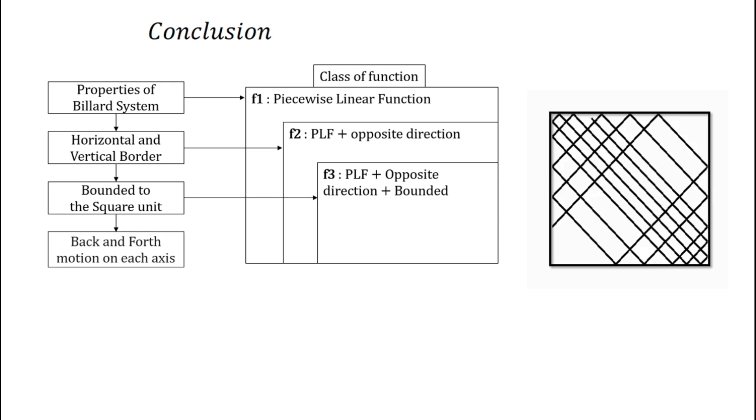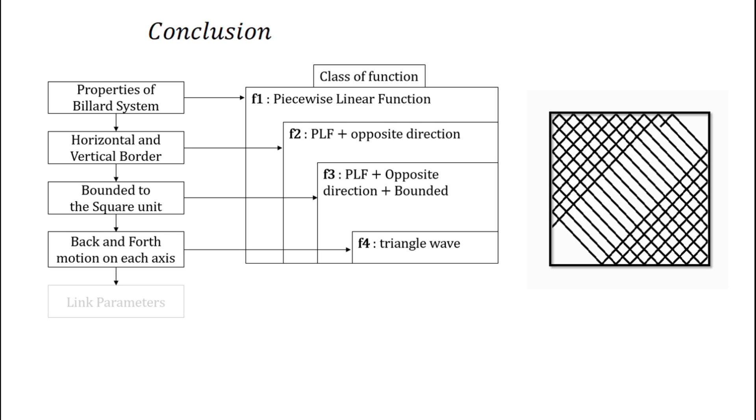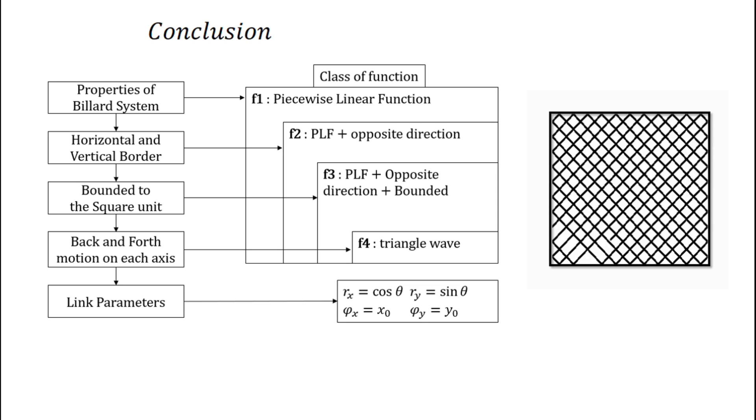And finally, we note that the ball was doing a back and forth motion, which led to the conclusion that it had to be a triangle wave function. Then we just had to link parameters of triangle wave function with billiard parameters, and we get the resolution of the billiard square trajectory equation.